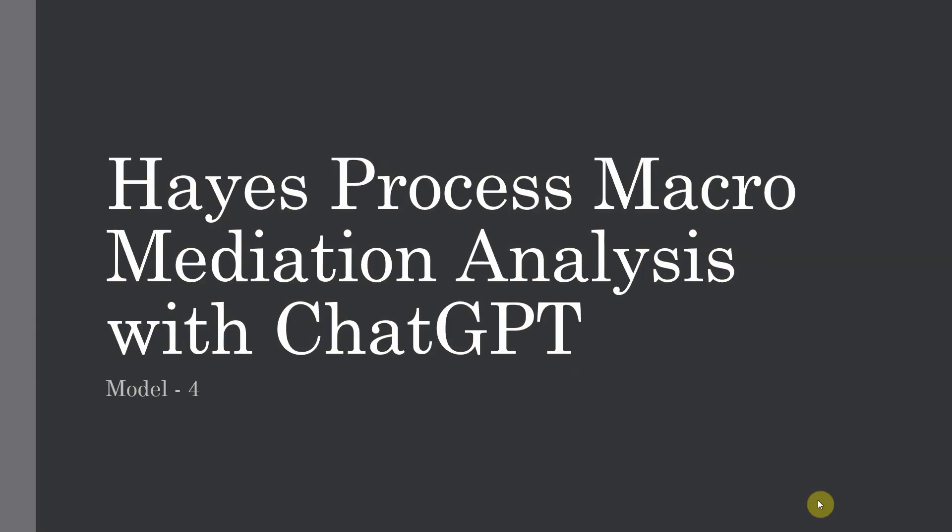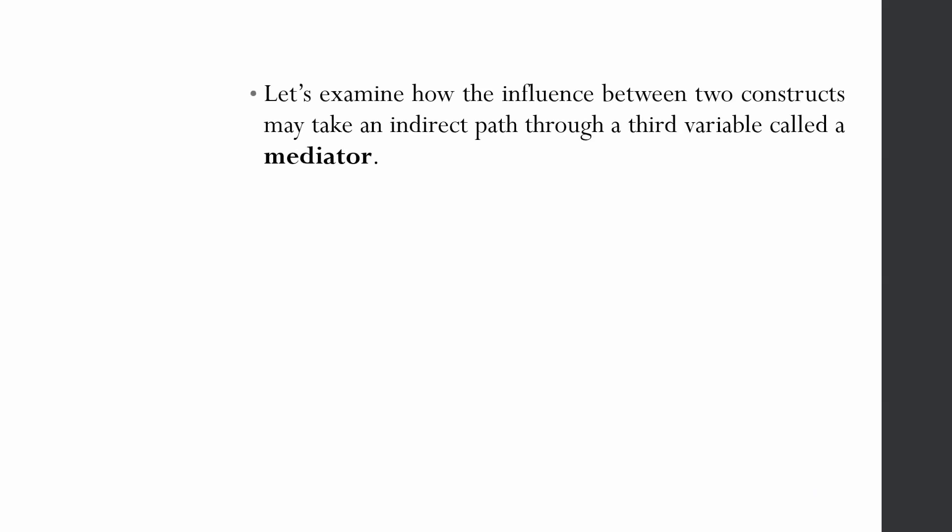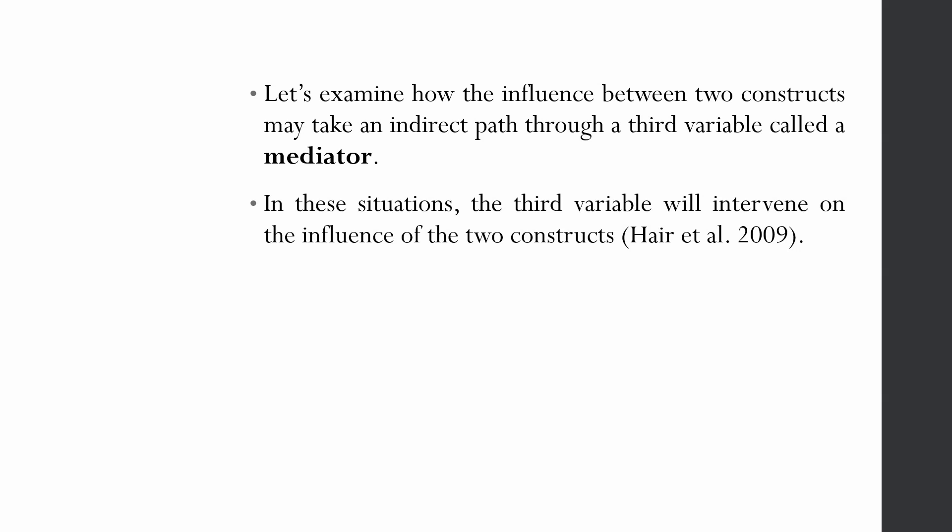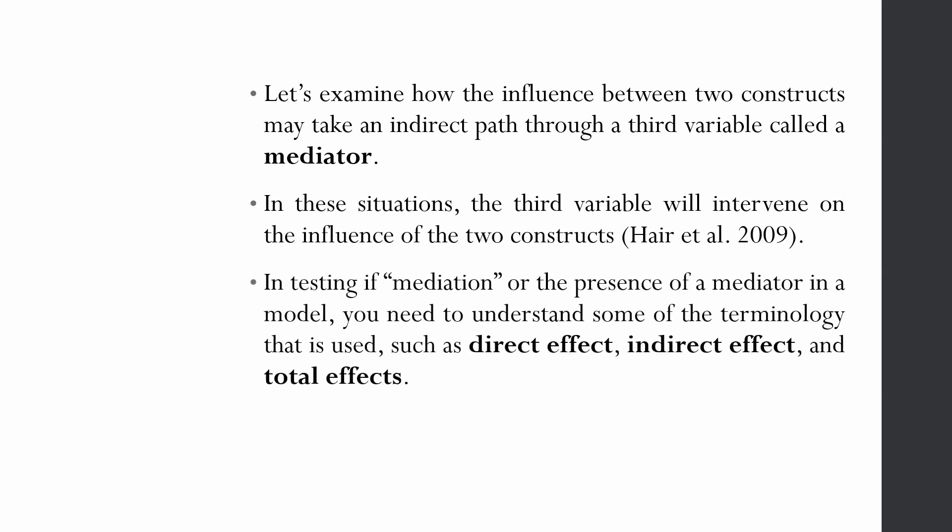In this session we are going to use ChatGPT to understand how to use and interpret the output from the PROCESS macro when we conduct mediation analysis model number four. Before we do that, let's examine how the influence between two constructs may take an indirect path through a third variable called a mediator. The mediation analysis helps you explain how an IV can influence a DV through another variable called a mediator. In these situations the third variable will intervene on the influence between the two constructs.